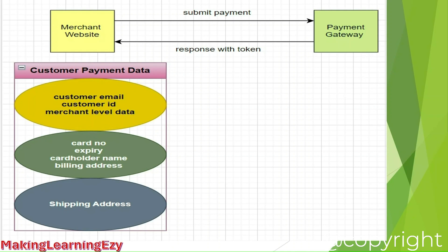Once the payment gateway receives this payment data, it will process the payment and those details will also be saved at the payment gateway side. If payment tokenization is enabled at the payment gateway side for that particular merchant, then the payment gateway will create one token against this payment data. A token is nothing but a unique code — that could be a number or a mix of letters and numbers — and that token will represent this particular customer payment data. The payment gateway saves that token against the customer payment data.